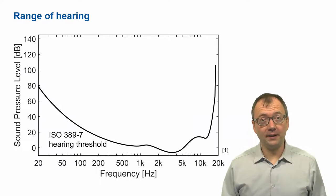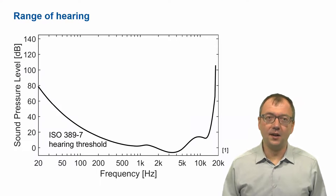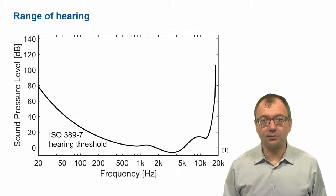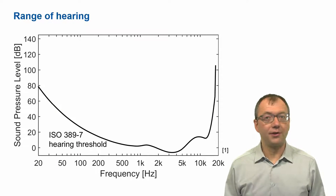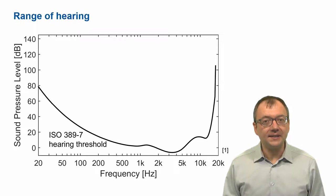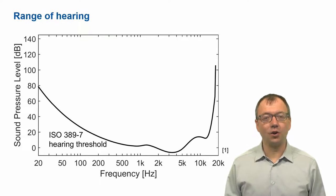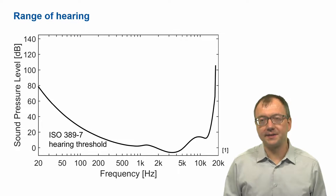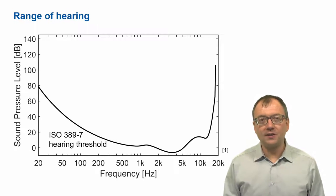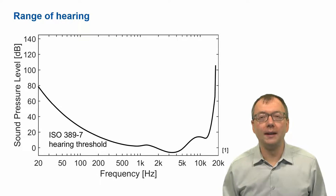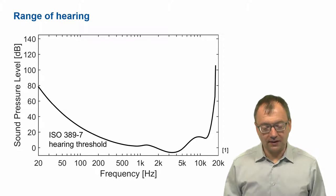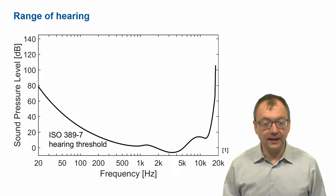The range of hearing is limited towards the low end by the hearing threshold. The hearing threshold, or also threshold in quiet, gives us the faintest sounds that are just audible without any other sounds being present. So it gives us the absolute lower limit of the auditory system — the sounds that are so faint that we just can hear.